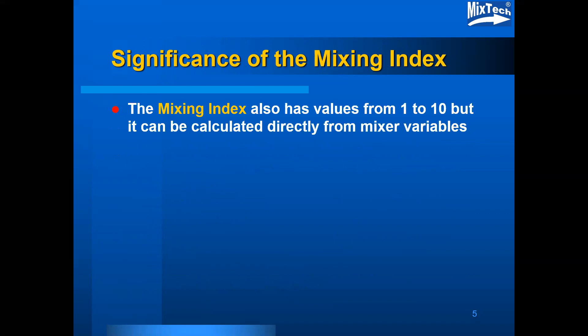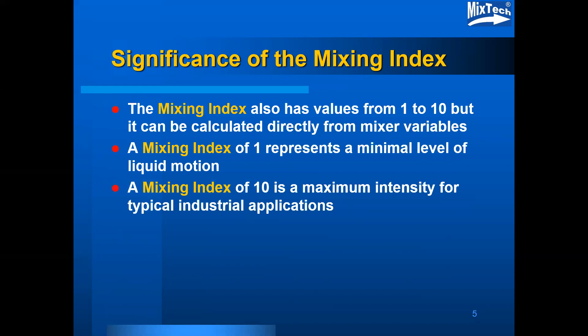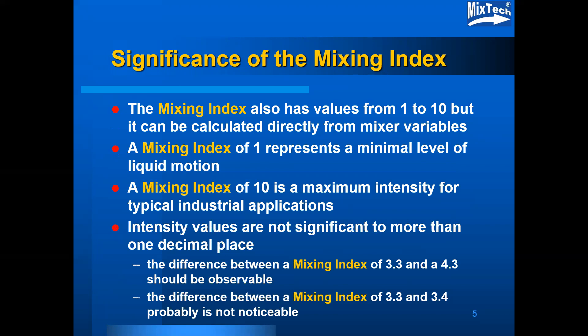The significance of this mixing index is that it also has values from 1 to 10, but they can be calculated directly from mixing variables. A mixing index of 1 represents a minimal level of liquid motion. A mixing index of 10 is typically a maximum intensity for industrial applications. Intensity values are not significant to more than one decimal place. The difference between a mixing index of 3.3 and 4.3 should be observable.